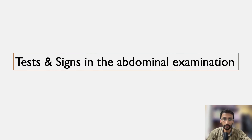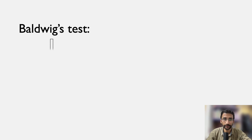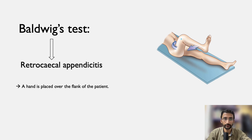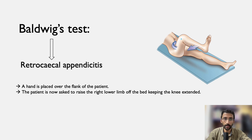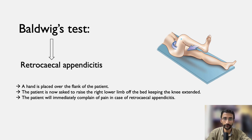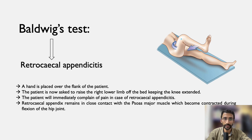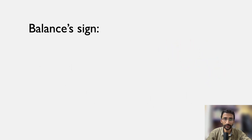The first test is the Baldock's test, done to confirm retrocecal appendicitis. A hand is placed over the flank of the patient, and the patient is asked to raise the right lower limb off the bed keeping the knee extended. The patient will immediately complain of pain in case of retrocecal appendicitis, as the retrocecal appendix remains in close contact with the psoas major muscle, which becomes contracted during flexion of the hip joint.